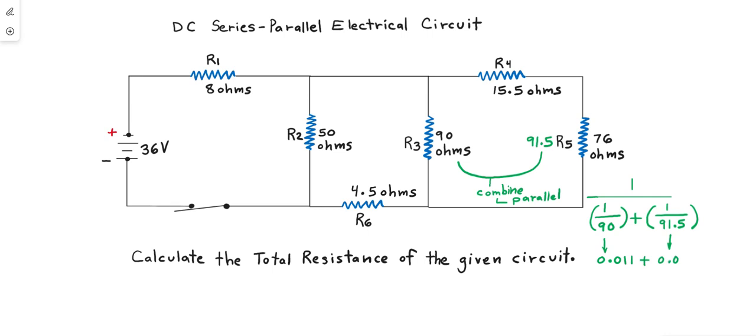We add them together in the denominator of the inverse sum law fraction. Basically, take 1/90th as a fraction plus 1 over 91.5, add them together and place that value in the denominator, then find its inverse. The combined resistor in parallel value is 45.66.